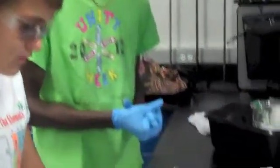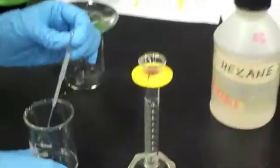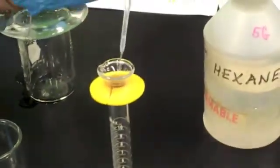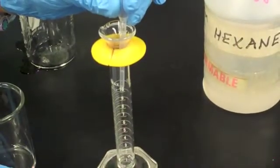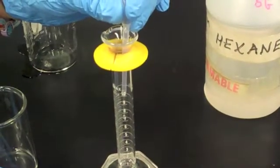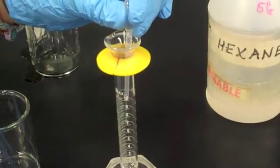Now we're going to take our hexane solution to calibrate the volume of one single drop of solution. And as you can see, once again, drop by drop into the graduated cylinder to see how many drops it takes to form one milliliter. And this is important because we're going to use this data to calculate the volume of the monolayer.